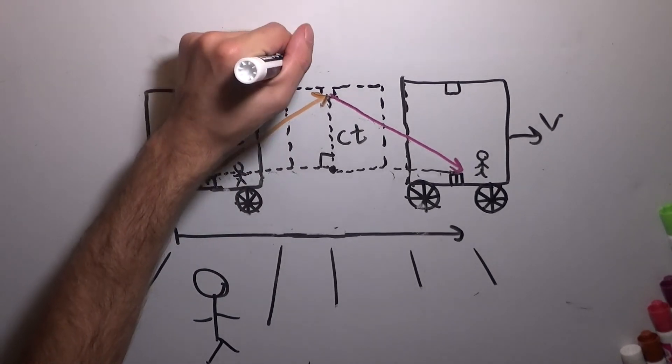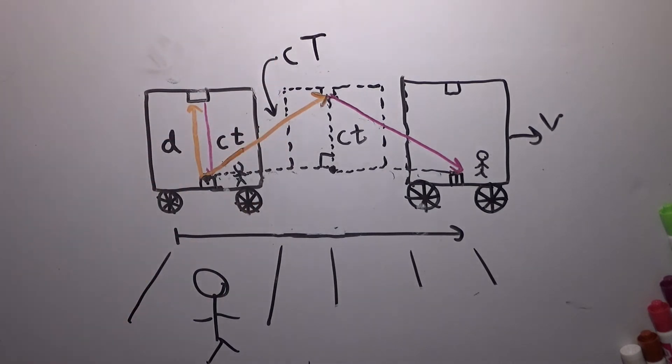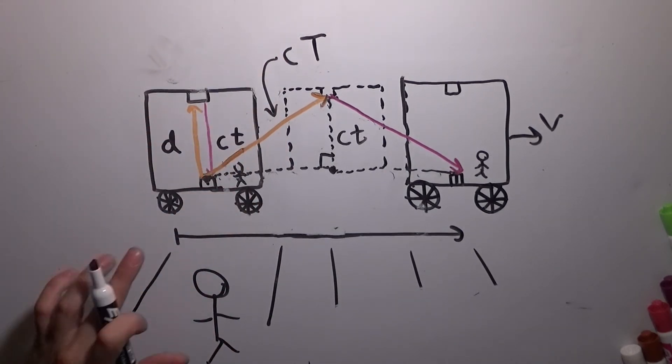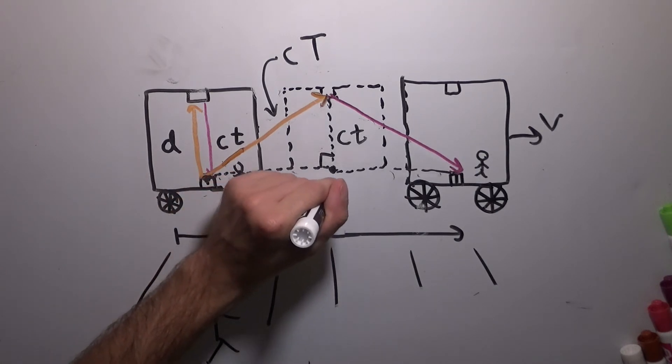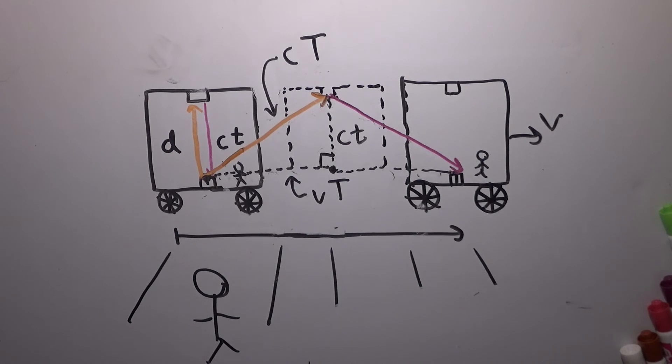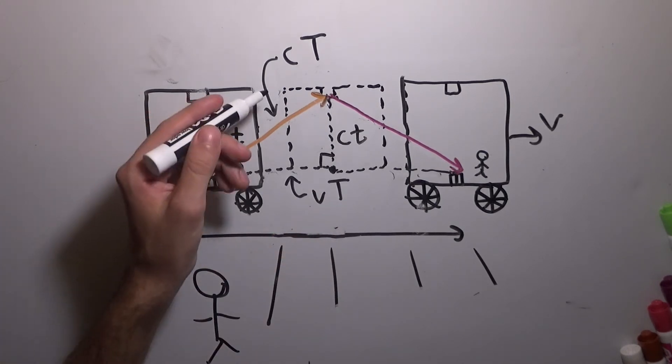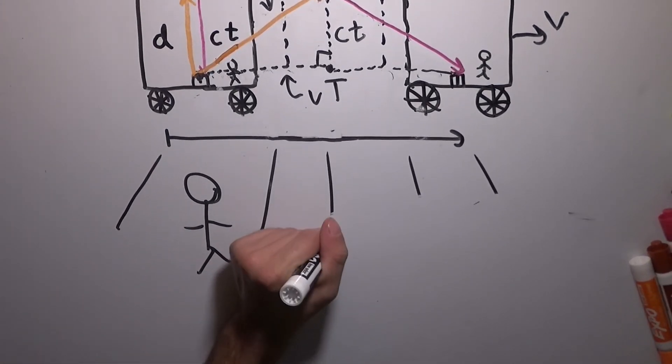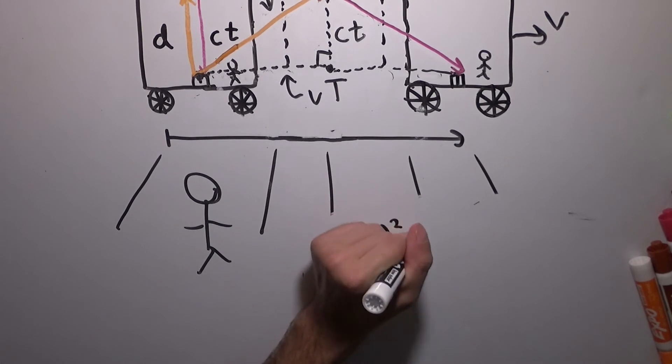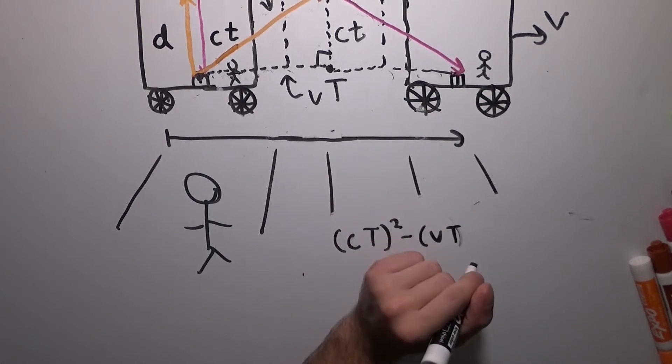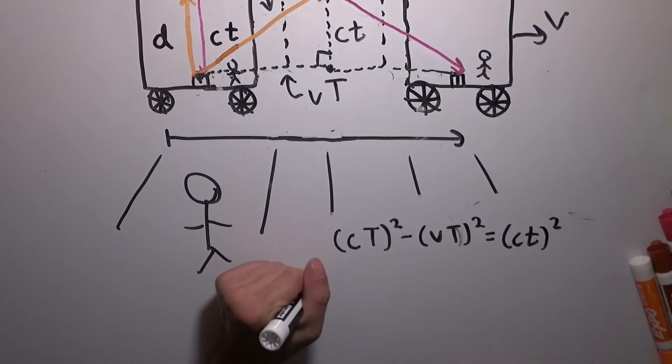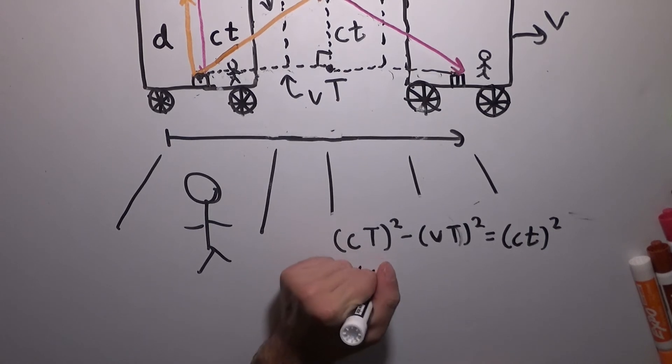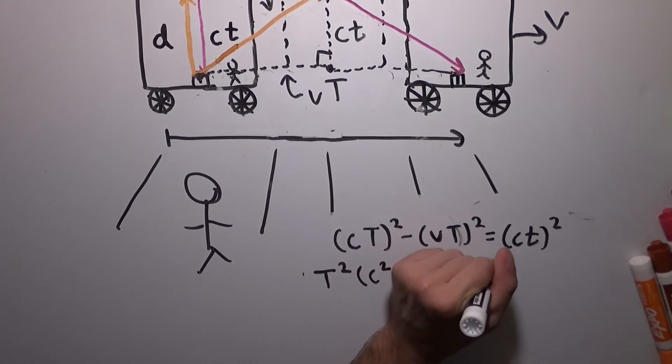And so we're going to have to call this C times capital T for this greater, different time. And because capital T is the length of time it took the light to go from here to here, it must also be the length of time it took for the train to go from here to here, which means this distance is V times this new capital T. And we can actually solve for this capital T using the Pythagorean theorem because this is a right triangle, right? We have that C times little t all squared plus V times big T all squared has to be C times big T all squared. We can rearrange that to end up with this. So we get C big T all squared minus V big T all squared equals C times little t all squared. Now we apply the squares, factor out the capital T squared. We get capital T squared times the quantity C squared minus V squared is equal to C squared times little t squared.